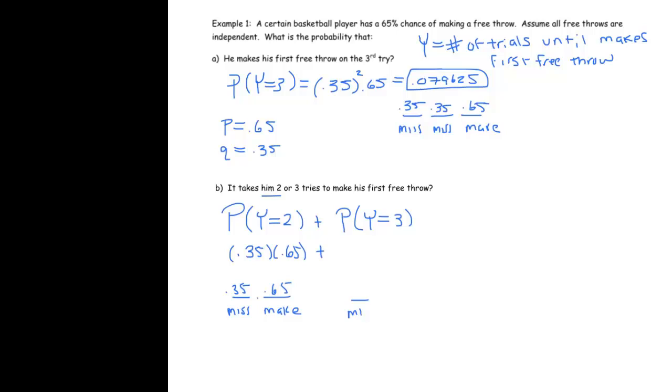That would happen if he misses, misses, and then makes it. So that would be .35, .35, .65.